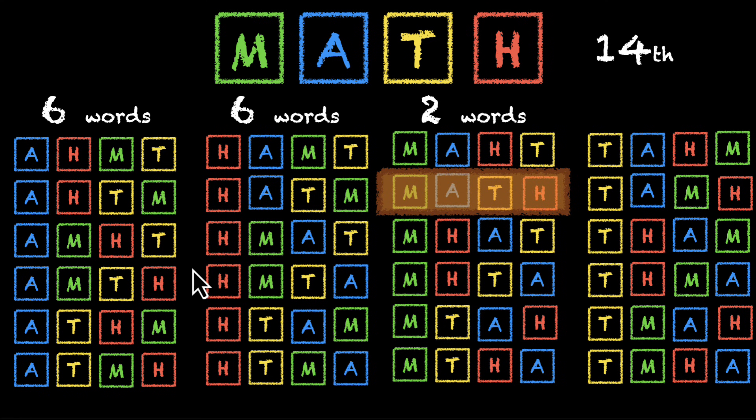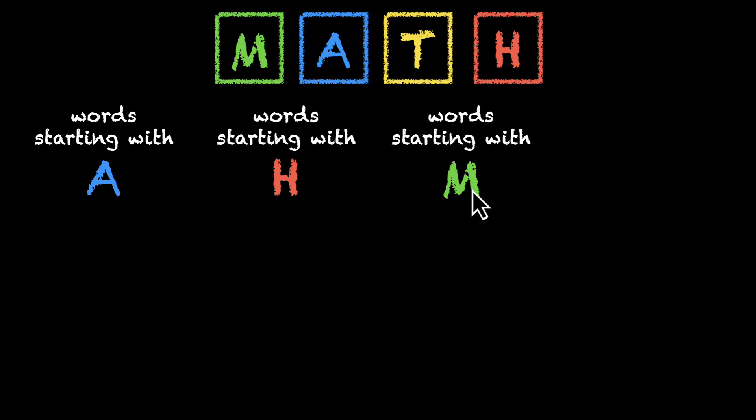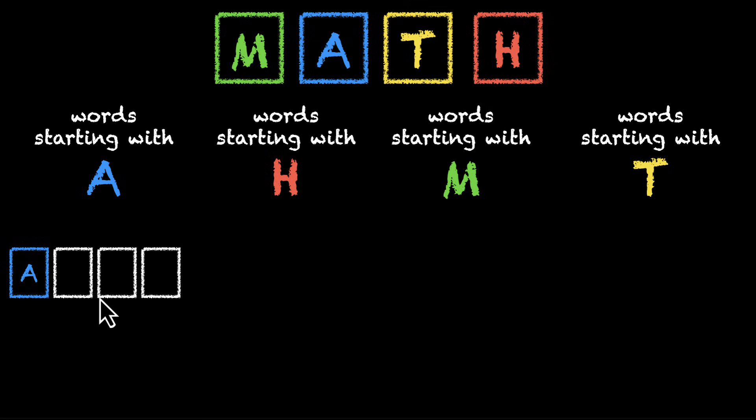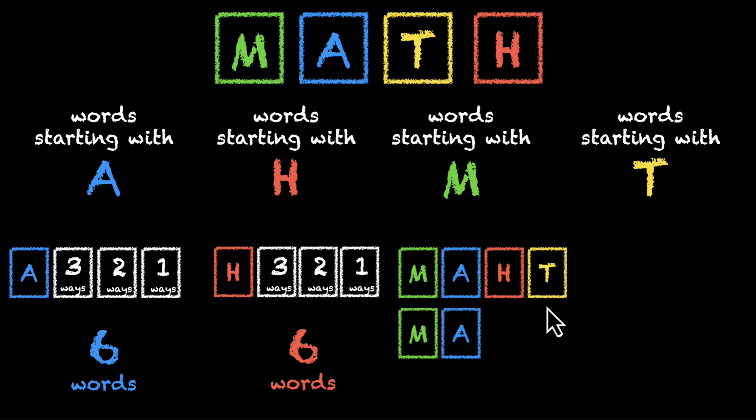So let's redo the same problem, but this time we'll not write all these words down. We have M, A, T, and H. If we're creating a dictionary, we'll first have words that start with A, then H, then M, and finally T. If we fix A, we're left with the other three letters, so that's three times two times one, which is six ways. Similarly, six words start with H. Now we're at M, and this is where we want to be. After M, the smallest letter is A, then H, then T: MAHT. We're very close to math. The next word is MATH. So six plus six plus one plus one equals 14. The rank of the word math is 14.